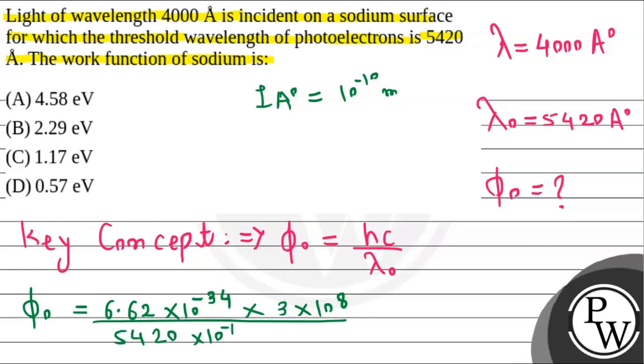One angstrom is equivalent to 10 to the power minus 10 meter. So this will be 10 to the power minus 10 meter. Now if you see in the given options, the answer needs to be found in electron volt, so we need to divide this by charge of electron, which is 1.6 into 10 to the power minus 19 coulomb.